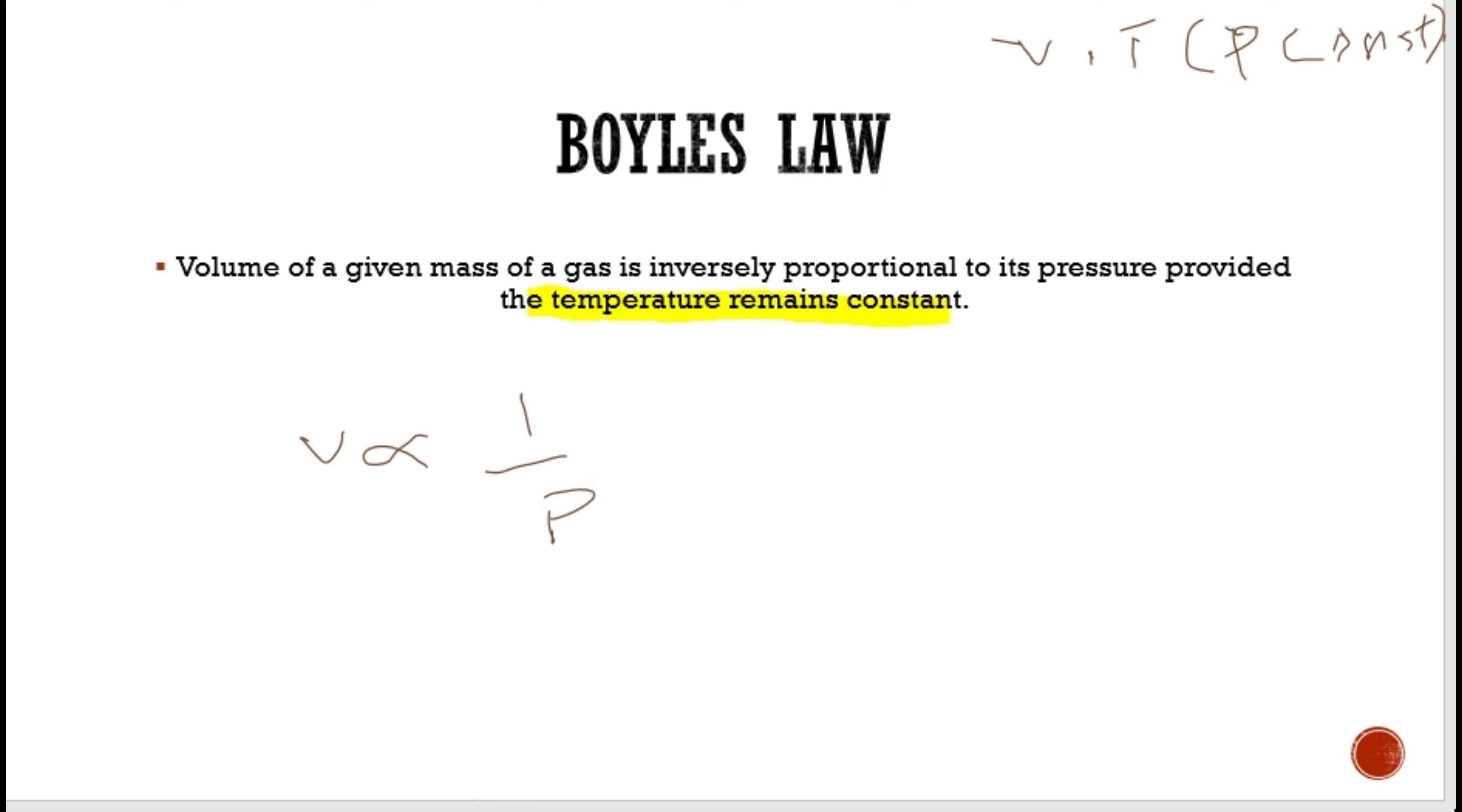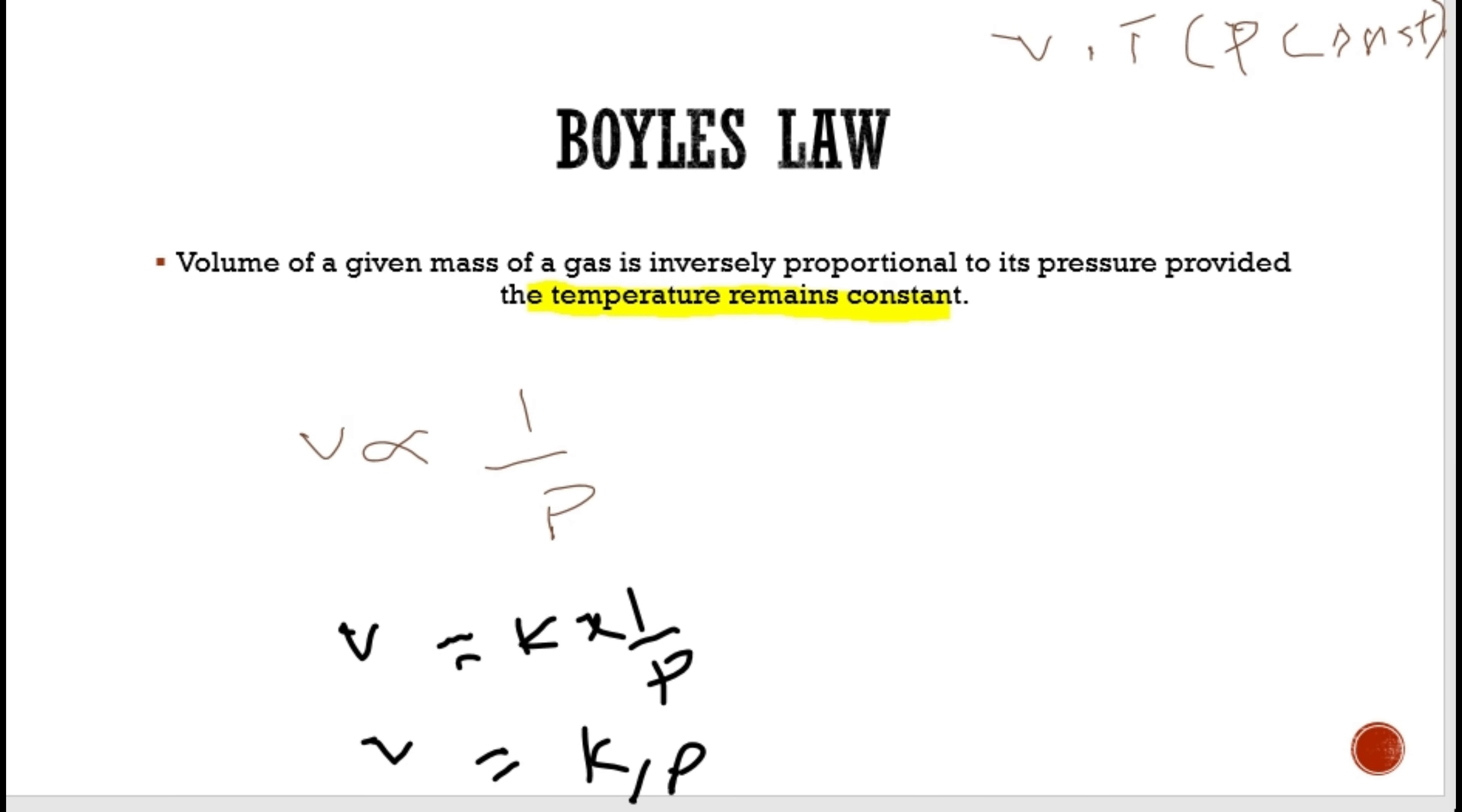If we remove the proportionality sign, then the proportionality constant k is used. V is equal to k multiply by 1 over P. V is equal to k over P. If we rearrange, P multiply by V is equal to k.